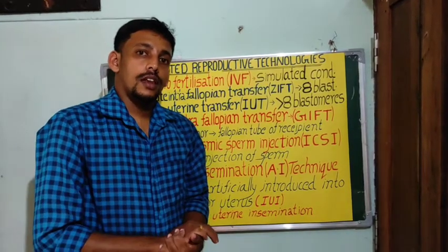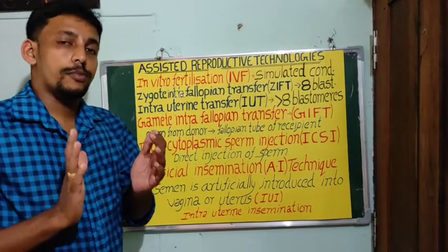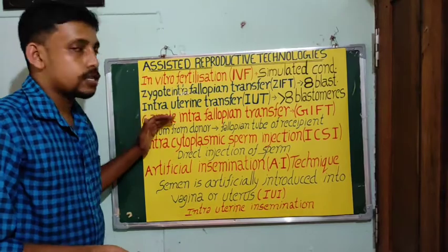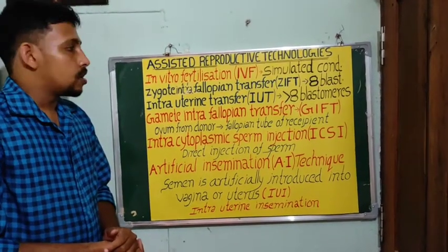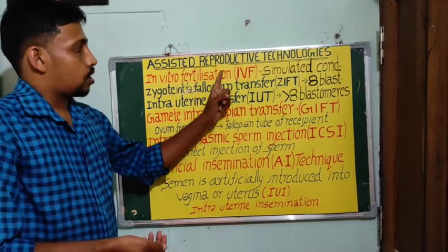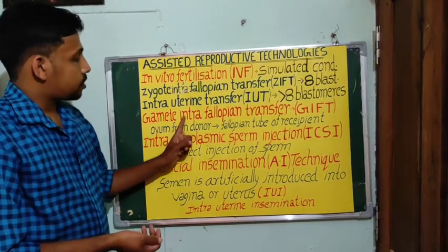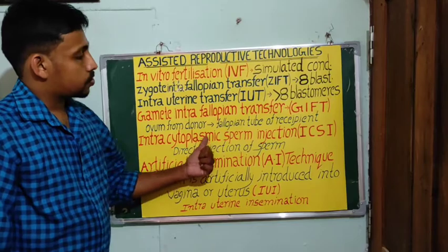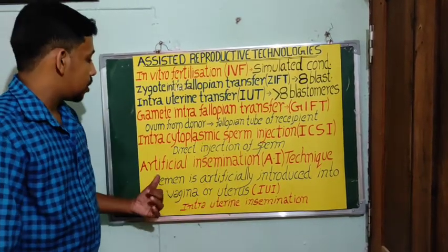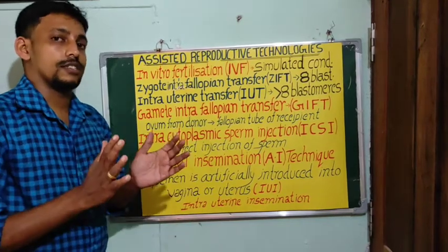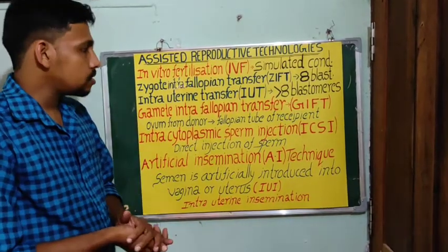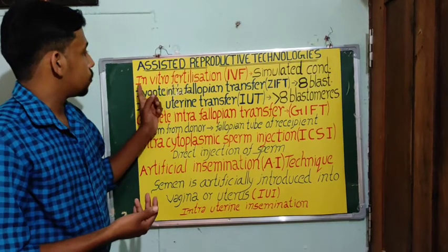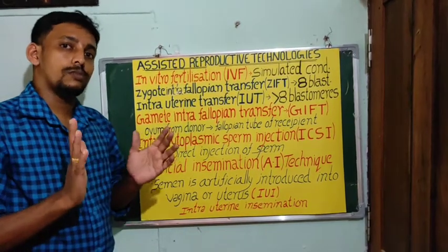Let's learn about the types of Assisted Reproductive Technologies. There is in-vitro fertilization or IVF, gamete intra-fallopian transfer or GIFT, intracytoplasmic sperm injection or ICSI, and artificial insemination or AI. The first technique, in-vitro fertilization, is otherwise known as the Test Tube Baby Program.